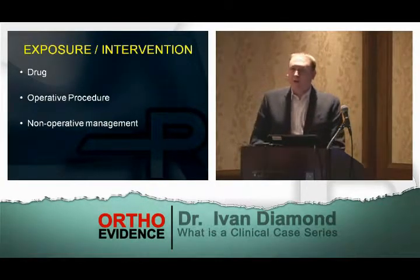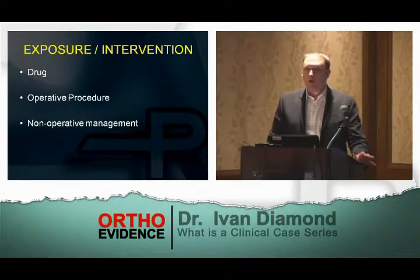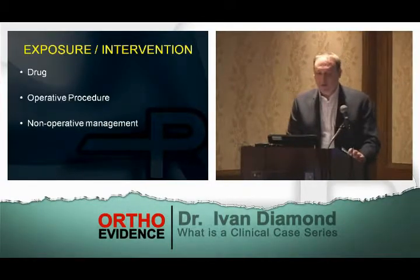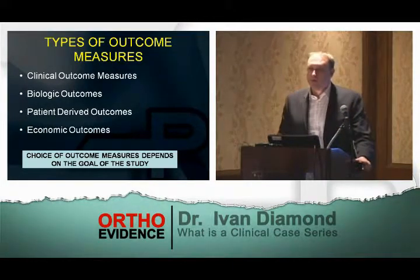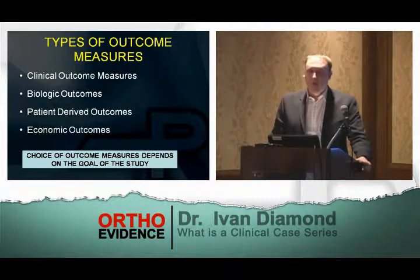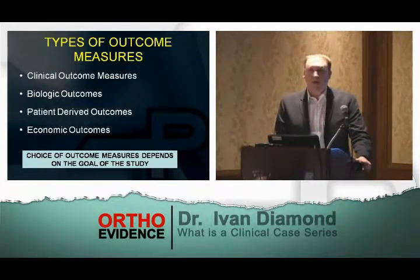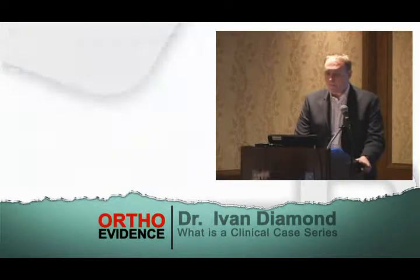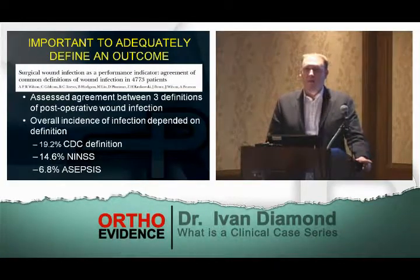The exposure or intervention in a clinical case series is either a medication, an operative procedure, or non-operative management of a condition. You also need to determine your outcome measures. Options include clinical outcomes, biological outcomes, patient-derived outcomes such as quality of life, or economic outcomes. The type of outcome is based on the study's goals, but it's critically important to adequately define the outcome, standardize it, and standardize how you collect it.